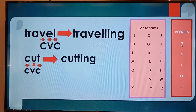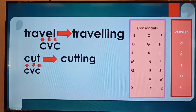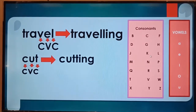Look at these two boxes. Vowels: a, e, i, o, u are called vowels. You know them well. Consonants: all the alphabets except these vowels are called consonants.